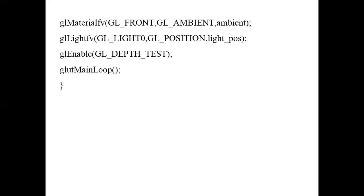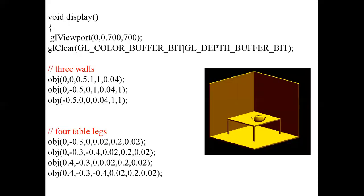Coming to our callback function display: first I set the viewport, which takes values x_min, y_min, x_max, y_max — passed as 0, 0, 700, 700. Then glClear is used to clear both the color buffer (GL_COLOR_BUFFER_BIT) and the depth buffer (GL_DEPTH_BUFFER_BIT).